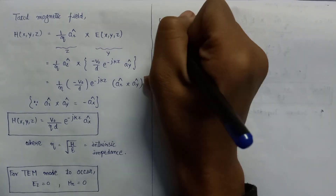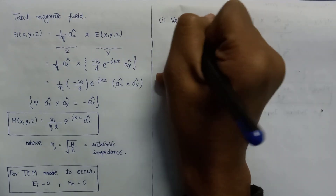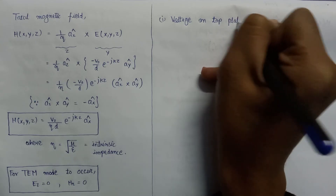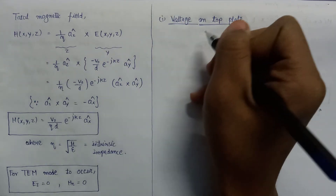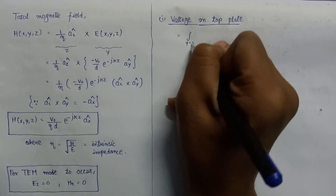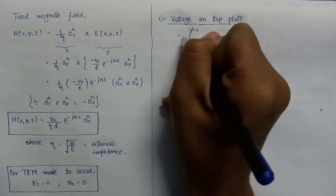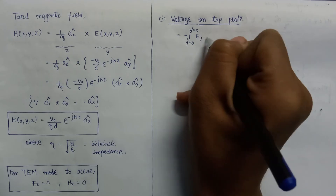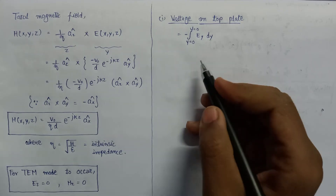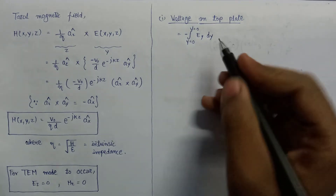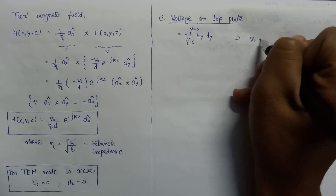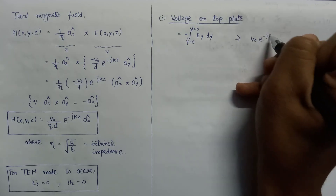The first parameter is the voltage on the top plate. The voltage is given as the integration from y equals zero to y equals D of E_y dy, since the variation of electric field only occurs in the y direction. Evaluating this expression gives the voltage on the top plate as V_naught · e to the power minus j·k·z.